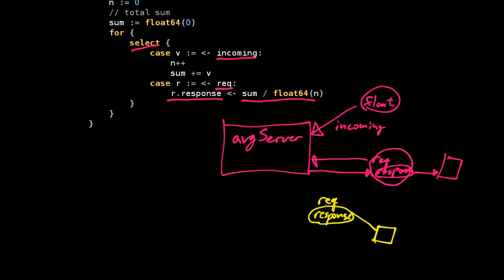He has a request with a different response. His response channel is there, and that's packaged up in this request. That's all sent to this average server. Then the average server replies over that response back to this guy. So there are these two different clients, and they're both sending requests to this channel and getting responses. The server knows who to respond to because it's in the request itself.